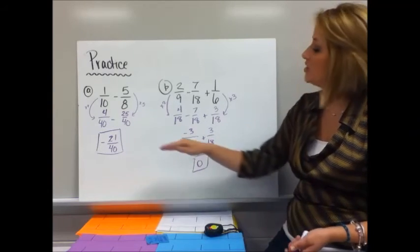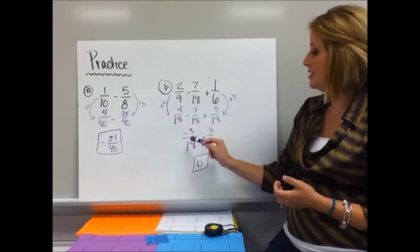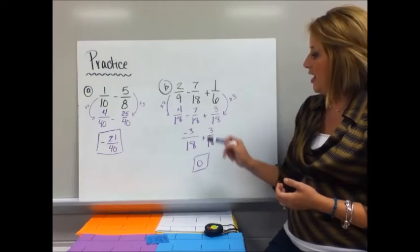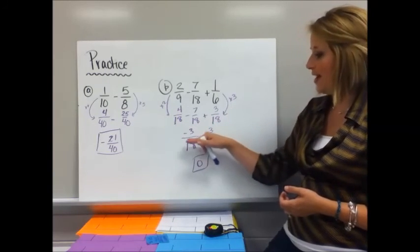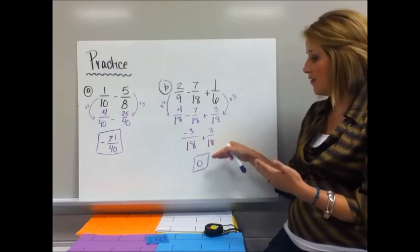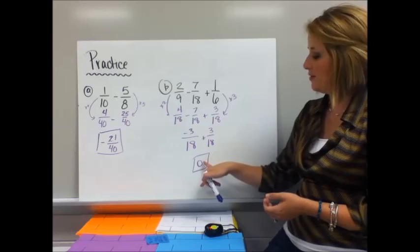Order of operations tells me to go left to right with adding and subtracting. 4 minus 7 is negative 3. Then I'm going to add 3/18, and when I look at that, see how they are opposites of each other? It's the additive inverse, so they're going to have a sum of 0.